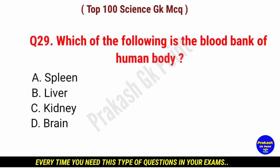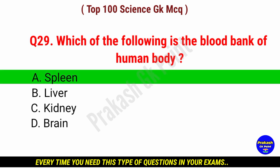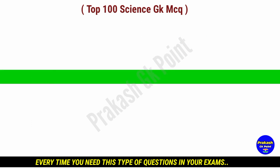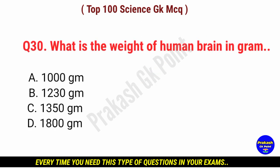Which of the following is the blood bank of human body? Answer: option A, spleen.